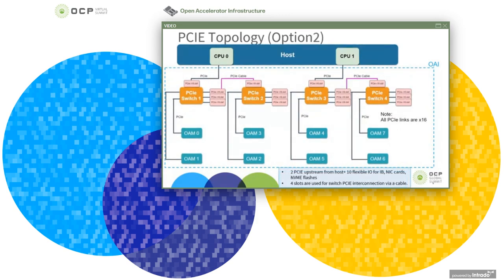In topology 2, bridge boards are populated in two out of the four PCIe upstream slots. Two PCIe Gen4 interconnection cables connect SW1 to SW2 and SW3 to SW4, using two PCIe upstream signals from host. The remaining 10 slots are used as flexible IO for InfiniBand, NIC cards, and NVMe flash. This is also the topology used for the AI training workload live demo.